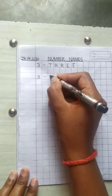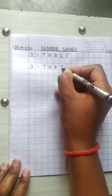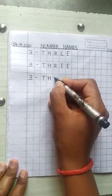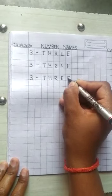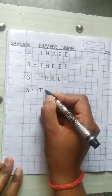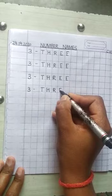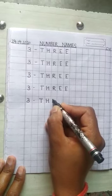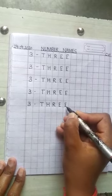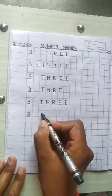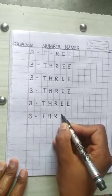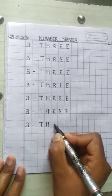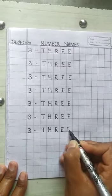3. T-H-R-E-E. What is the spelling of 3? T-H-R-E-E. 3. T-H-R-E-E. Write the spelling of 3. T-H-R-E-E. 3. T-H-R-E-E.